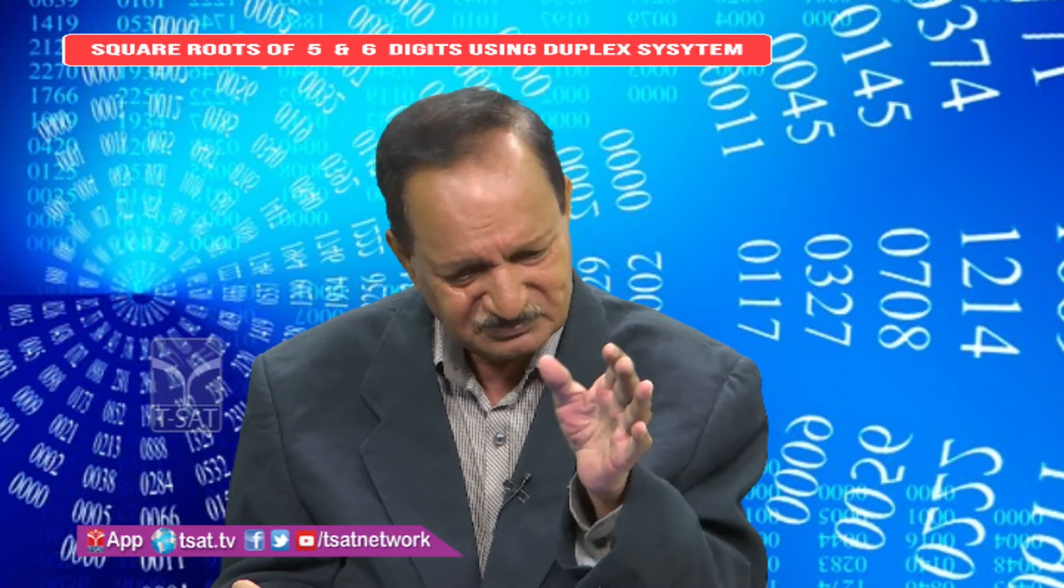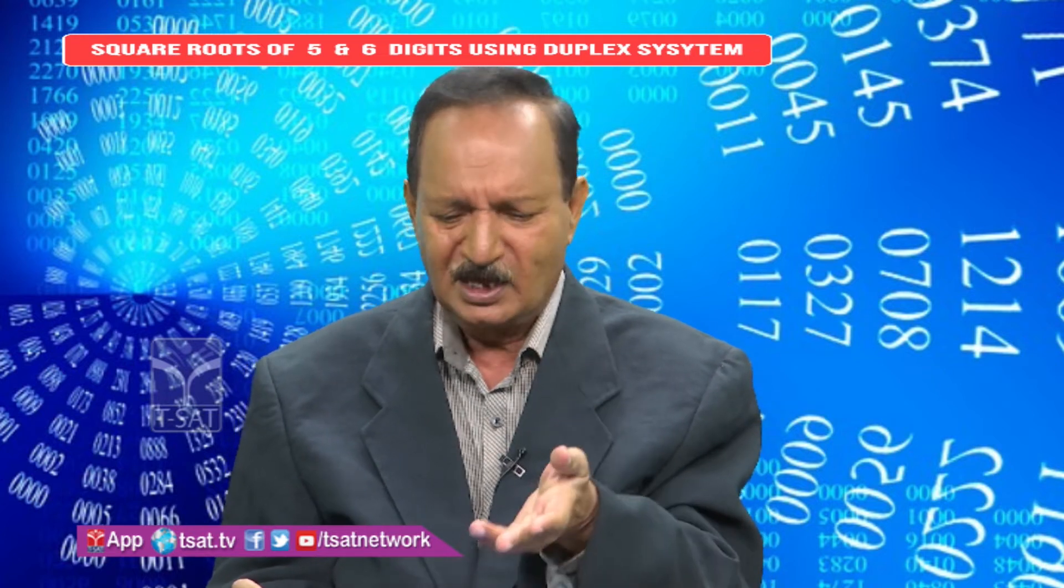This is the fundamental rule: suppose you have 3 or 4 digits with 2 groups, you have to find a 2-digit answer. For 5 or 6 digits with 3 groups, you need a 3-digit answer. It's only one step extra - you will get the square root of 5 or 6 digits. This is the wonder of speed math.